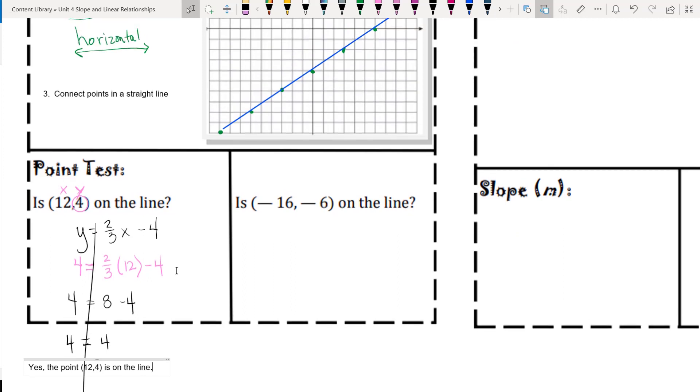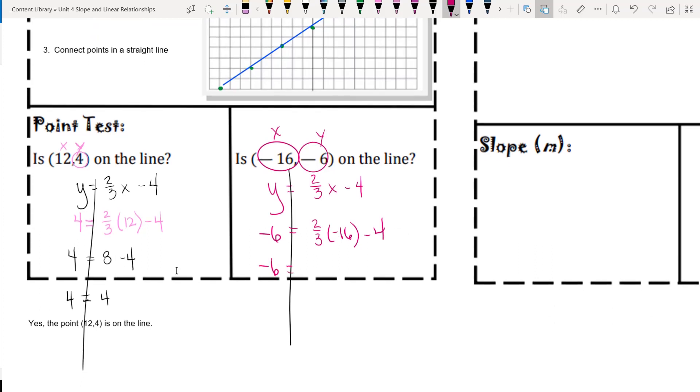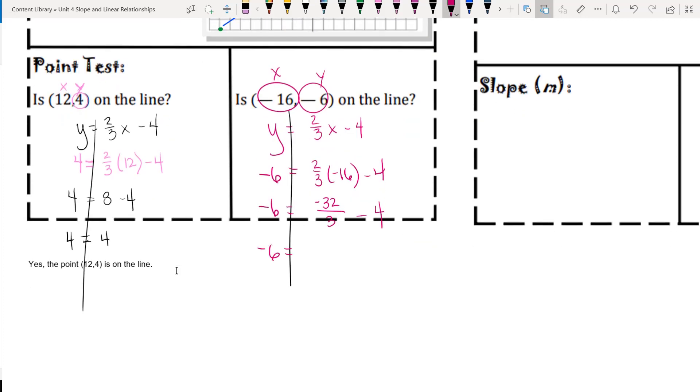Likewise, I would use the same process. Y equals 2/3x minus 4. So this time, this is y, negative 6, y coordinate. This is x coordinate. We're going to start evaluating. This doesn't play nice. 2/3 times negative 16, we'll just leave as an improper fraction, negative 32/3. And then minus 4. This ends up with negative 14 and 2/3.